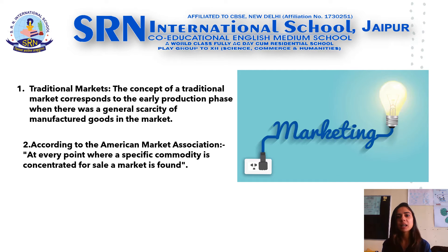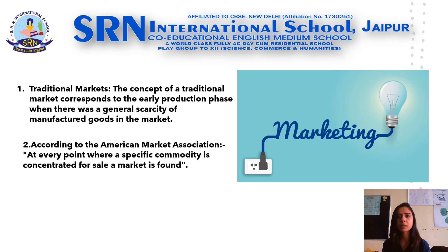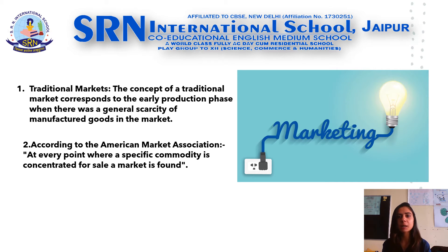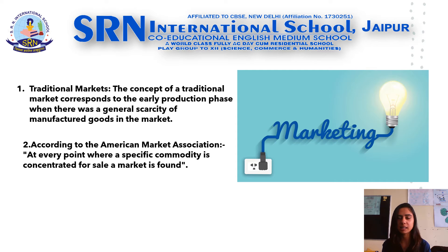Secondly, there are different markets for different commodities such as vegetable markets, food grains market, etc. The traditional concept focuses that market means a place only where actual buying and selling takes place.